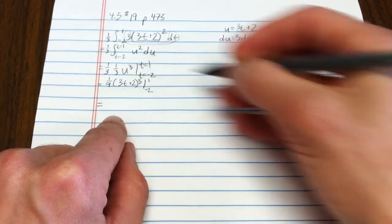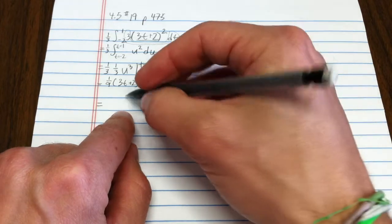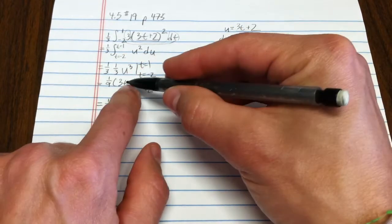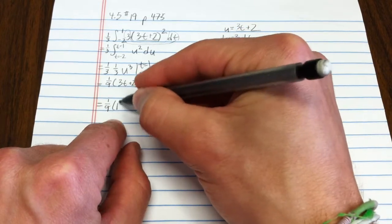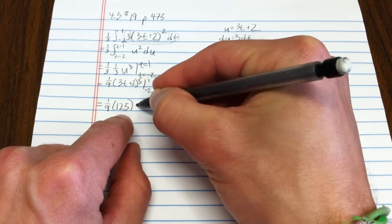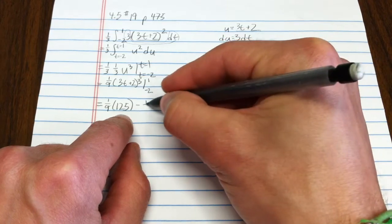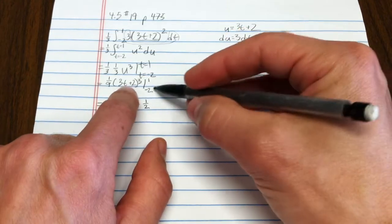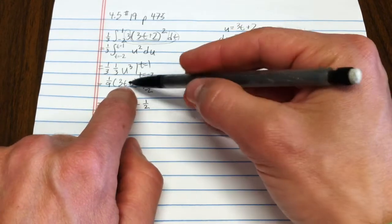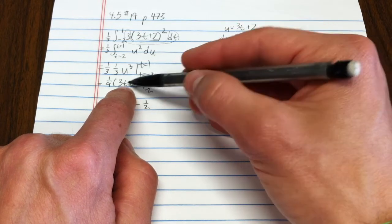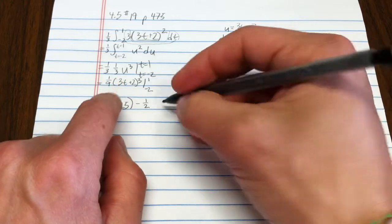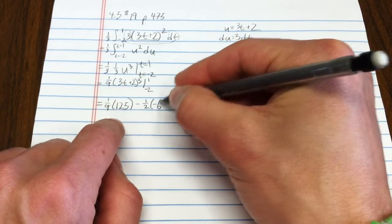So, what's that give me? If I plug in a 1, that gives me 1 ninth, that'll give me 5 to the 3rd, that's 125, minus 1 ninth. What happens if I plug in negative 2? That's negative 6 plus 2 is negative 4 to the 3rd, that's negative 64.